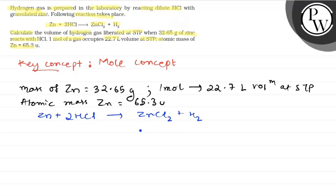From the above equation, it is very much clear that 65.3 gram of zinc when reacts with HCl, it produces 22.7 liters of H2 at STP. Because there is 1 mole of zinc and 1 mole of hydrogen.